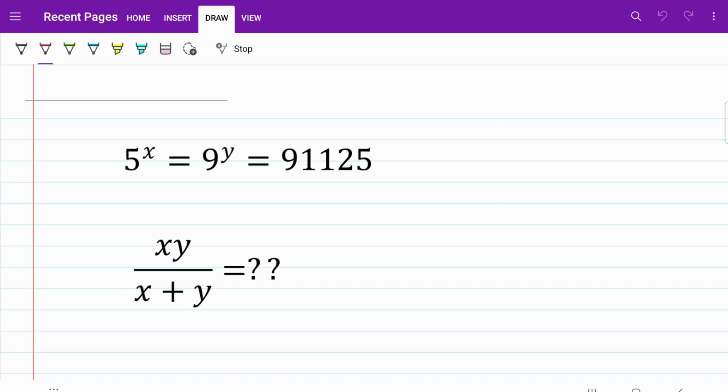We are given 5 to the power of x is equal to 9 to the power of y is equal to 91,125. From there, we are trying to find the value of a fraction consisting of both these variables.